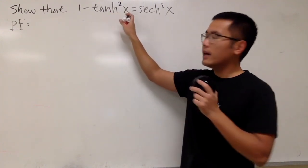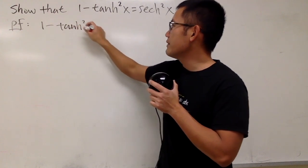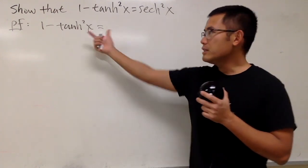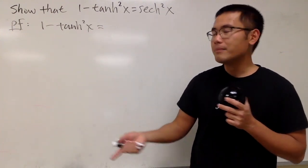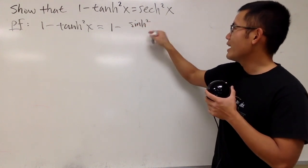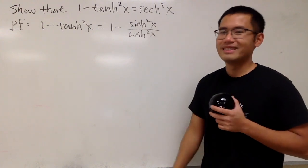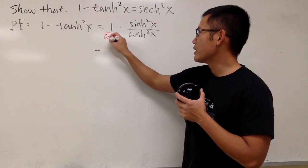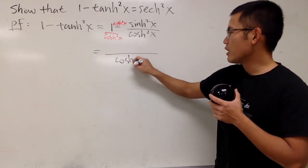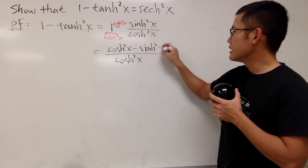We now show that 1 minus hyperbolic tangent squared x equals hyperbolic secant squared x. Starting from the left-hand side: tanh x equals sinh x over cosh x, so tanh squared x is sinh squared x over cosh squared x. We get a common denominator of cosh squared x, giving us (cosh squared x minus sinh squared x) over cosh squared x.